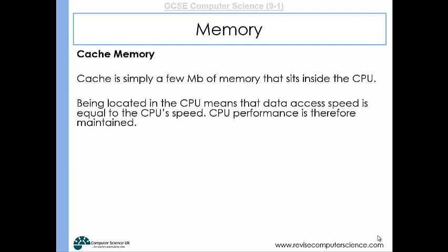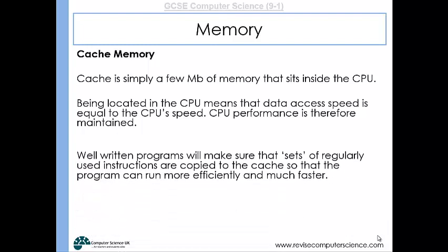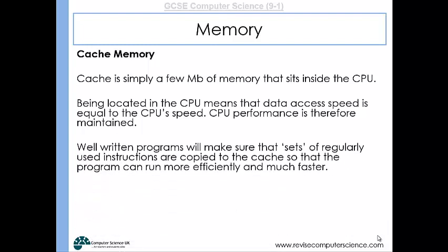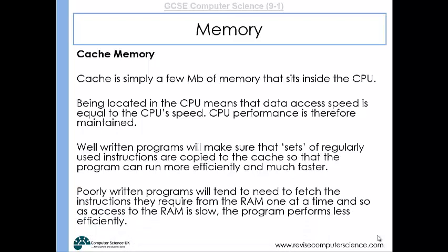Cache is only a few megabytes of memory, sitting inside or very close to the CPU. Because it's so close, the access speed is incredibly quick — it can deliver the billions of instructions the CPU needs every second. Well-written programs ensure that regularly used instructions are positioned in the cache so programs can run more efficiently and faster. If a CPU regularly uses a certain set of instructions from a program, they're more likely to be placed in cache. Poorly written programs fetch instructions from RAM one at a time, and because RAM access is so much slower, these programs perform much less efficiently.